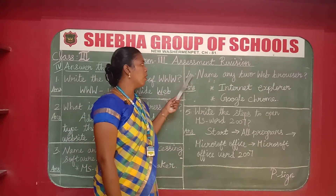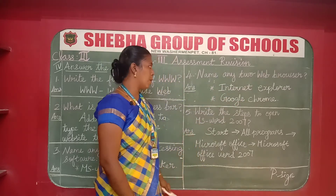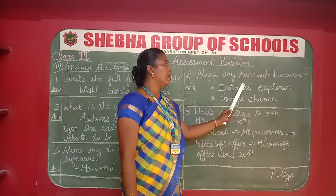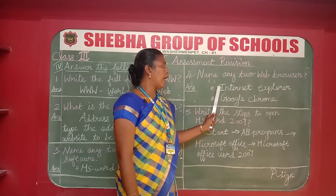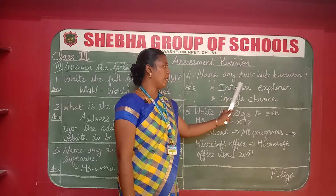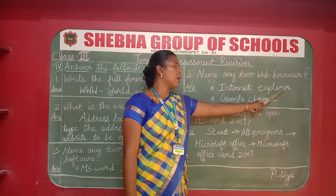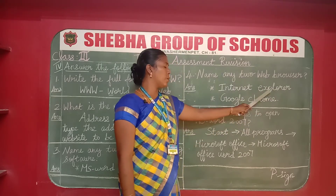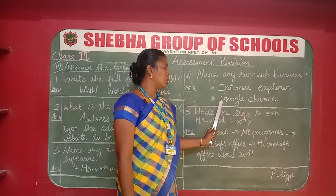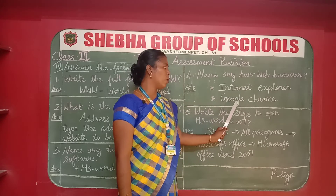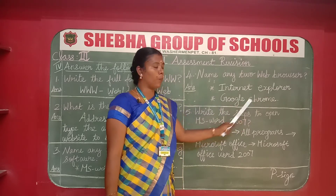Number four: name any two web browsers. The answers are Internet Explorer — I-N-T-E-R-N-E-T E-X-P-L-O-R-E-R — and Google Chrome — G-O-O-G-L-E C-H-R-O-M-E.